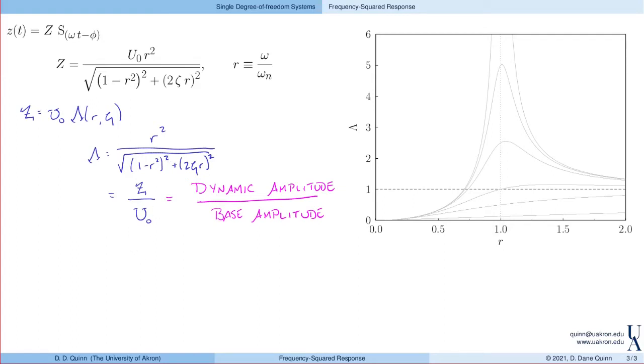Looking at how this behaves, we can plot this as a function of r as zeta varies, much like we did with the magnification factor or even the transmissibility. A couple of things to notice: As r goes to zero, lambda goes to zero. The numerator is r squared, so regardless of the damping ratio, for low frequencies, and low here means low relative to the natural frequency, the response, the relative response amplitude is small. As r goes to zero, this goes to zero as well.